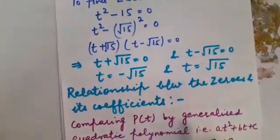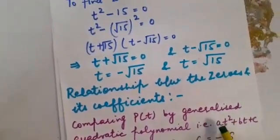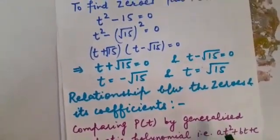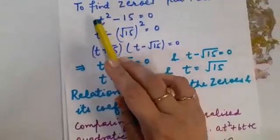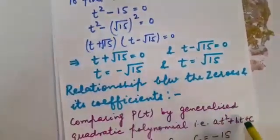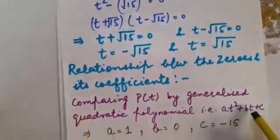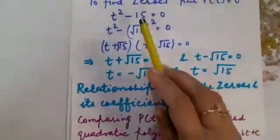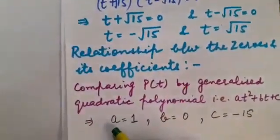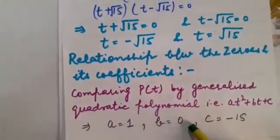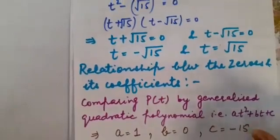While comparing what can we judge here a is the numerical coefficient of t². So children here what is the numerical coefficient of t² that is 1. Here we don't have any term with t so definitely b will become 0 and c will be minus 15. So a is equal to 1, b is equal to 0 and c is equal to minus 15.